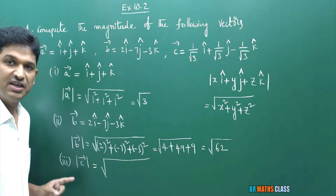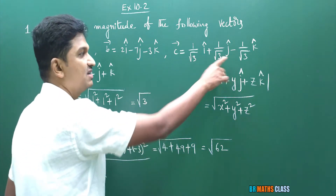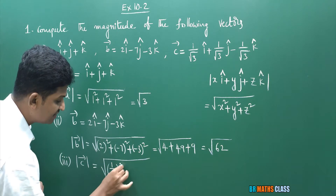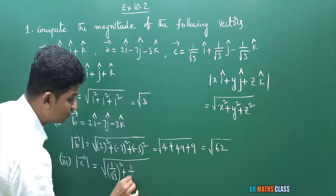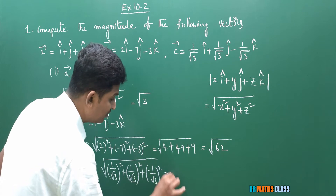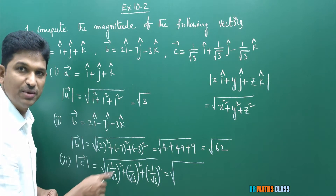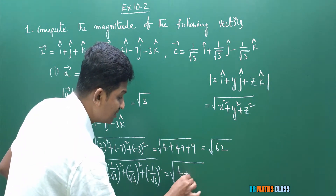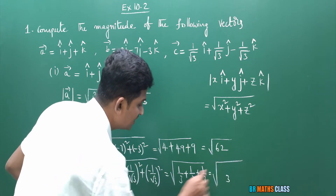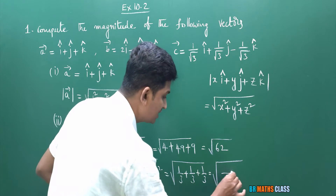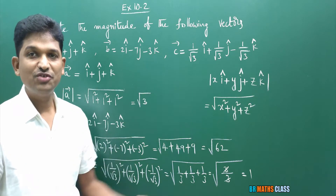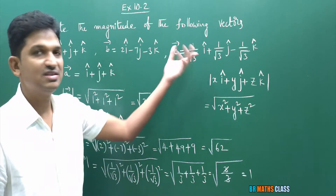Similarly, for the third vector c bar, the scalar components are 1/√3, 1/√3, −1/√3. The magnitude is the square root of (1/√3)² + (1/√3)² + (−1/√3)², which equals root of (1/3 + 1/3 + 1/3) = root of 1 = 1. So the magnitude of this third vector is 1. Since its magnitude is 1, this is a unit vector.